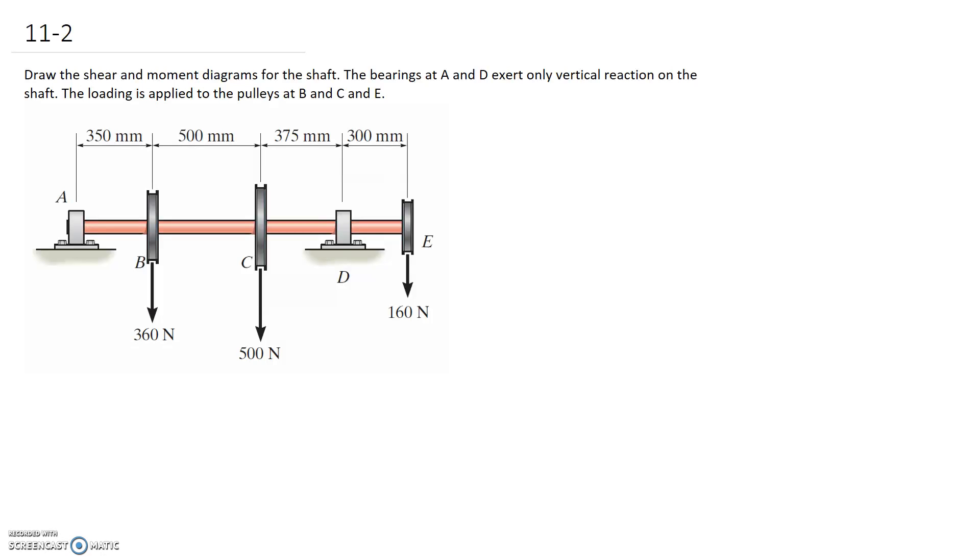For this question we're asked to draw the shear and moment diagrams for the shaft. The bearings at A and D only exert vertical reactions on the shaft, so that means we don't need to consider horizontal reactions at those points.